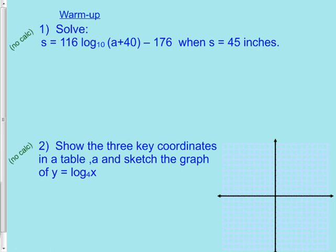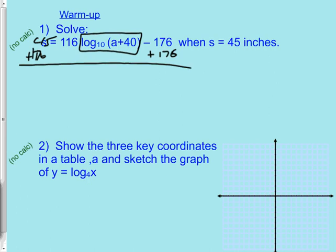Let's do this warm-up question right here — it's in blue, give it your best shot. Try both of these; make a little XY chart for number two. I don't expect you to be awesome at number two but you should be good at number one. For number one: 45 goes here, then I'm going to get the clump alone, add 176 here — 45 plus 176 is 221.